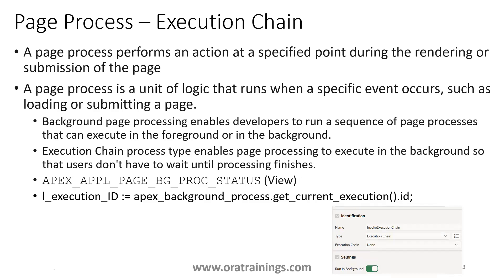We use a concept called execution chain, which is a page process type. A page process is an action that happens whenever you perform an event. Within page processes, one kind is called execution chain. Using an execution chain you can define a list of processes that execute in a step-by-step manner - step A, step B, step C - running one after the other.